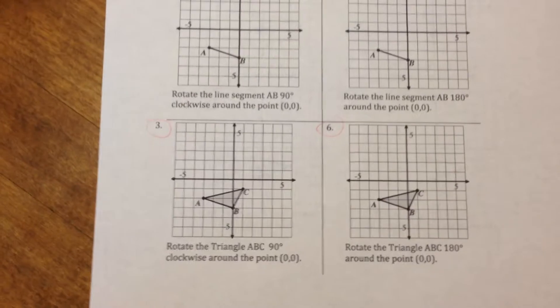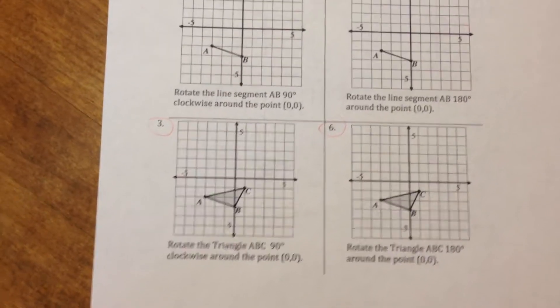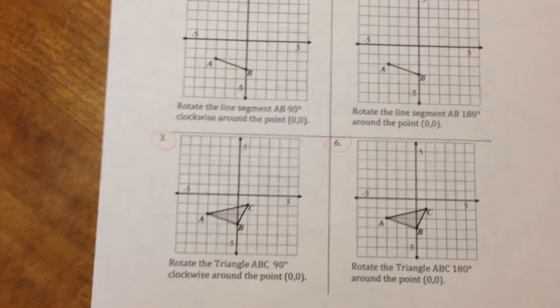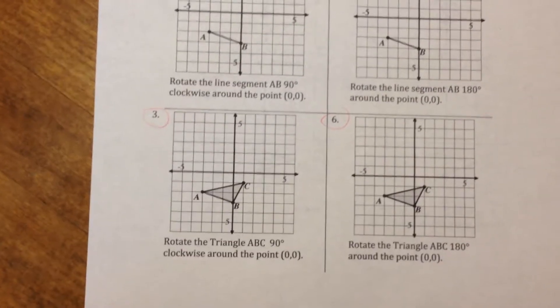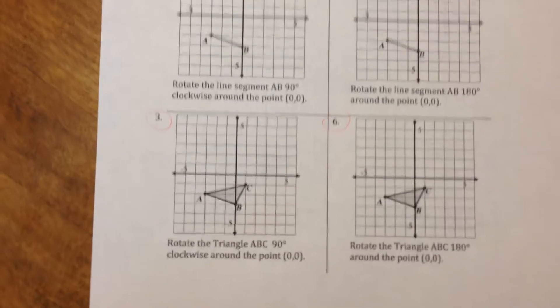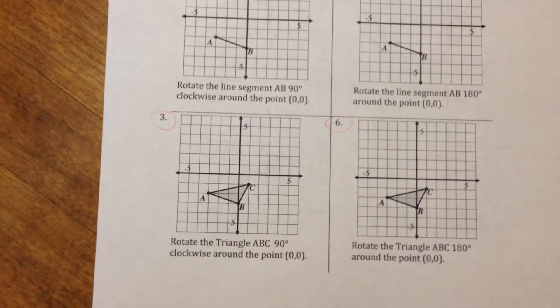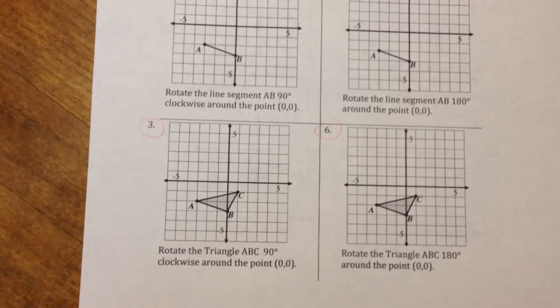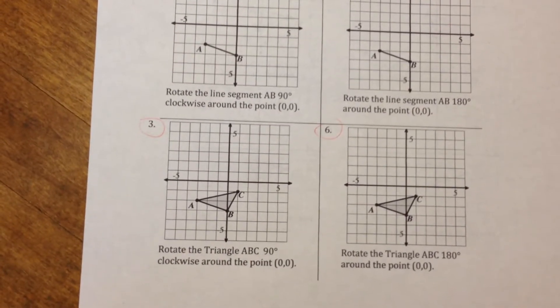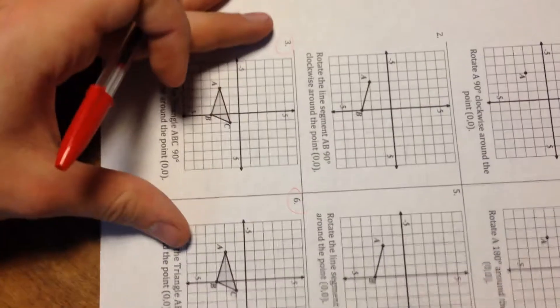We need to rotate this triangle 90 degrees clockwise around the point (0,0). So with the paper turning method, it's as simple as it sounds — you turn the paper the same way that you're turning your shape. So I'm going to go ahead and turn my paper 90 degrees clockwise around the point (0,0), which is going to look like this.